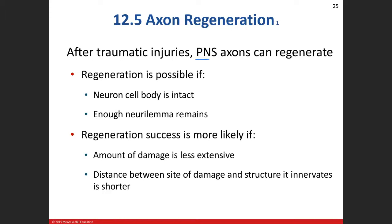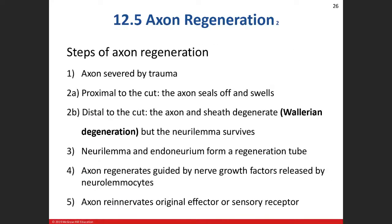Regeneration — if we're in the peripheral nervous system, the axons can regenerate, but you have to have an intact cell body. A lot of the protein production for parts of the cell occurs in the cell body via the endoplasmic reticulum and ribosomes. We also need enough of our neural lemma to remain intact. What makes regeneration more likely is if you sever a neuron and the gap between the two severed ends is fairly small — then the two severed ends have a higher likelihood of reconnecting.